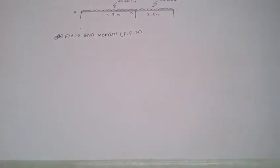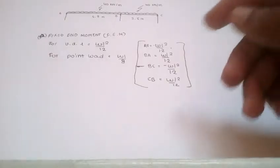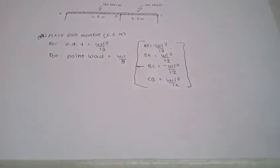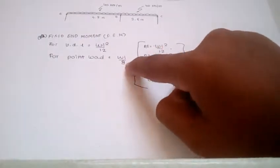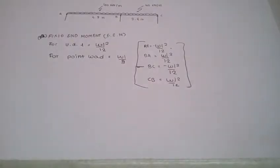First to find is the fixed end moment. The fixed end moment is the moment at the fixed end, and that could be calculated by the following formulas. For UDL, the formula is WL squared by 12, and for point load is WL by 8. That's the formula you have to apply.